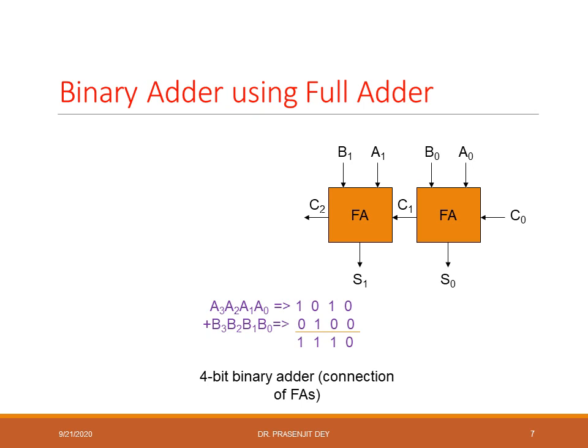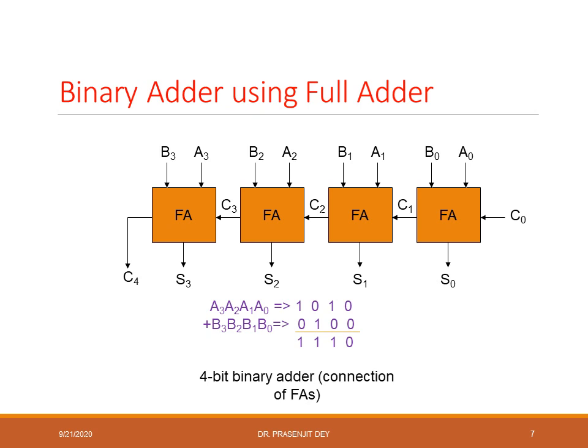The third full adder receives a2, b2, and carry c2, producing s2 and carry c3. The fourth full adder receives a3, b3, and carry c3, producing s3 and the final carry c4. The complete binary addition result is represented by c4, s3, s2, s1, and s0.